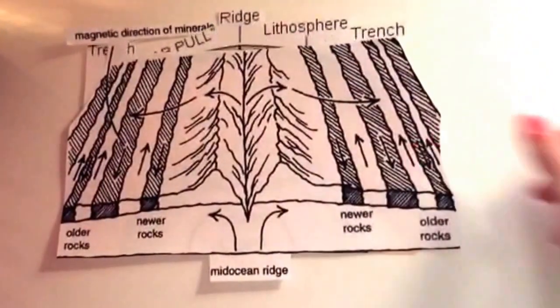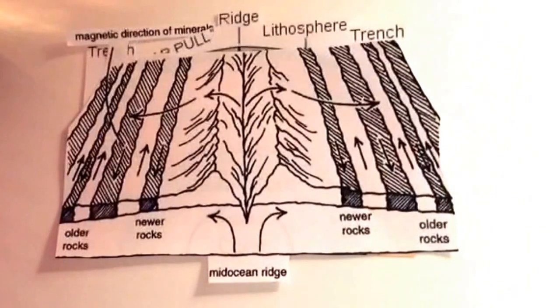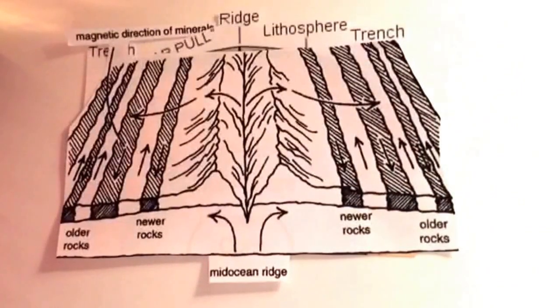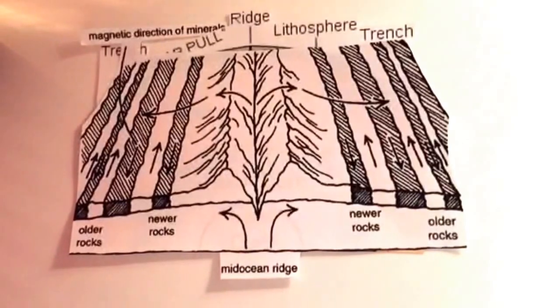The younger the rock, the closer it will be to the ridge, and the older the rock, the farther away it will be from the ridge. An example is the mid-Atlantic ridge that formed between the African plate and the South American plate.